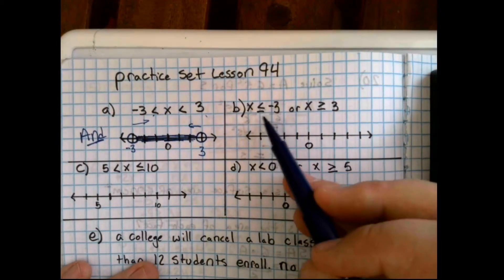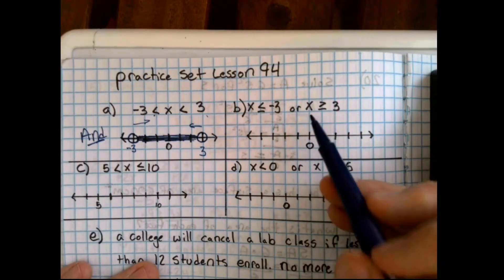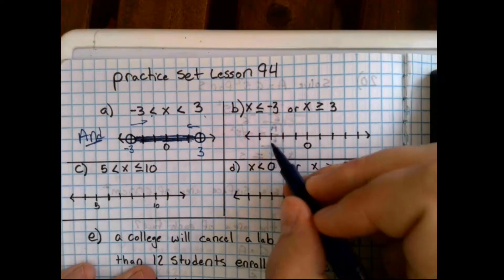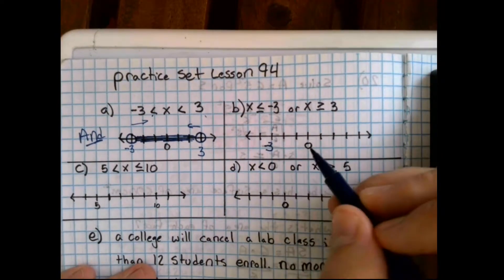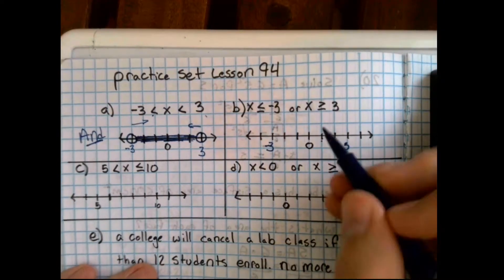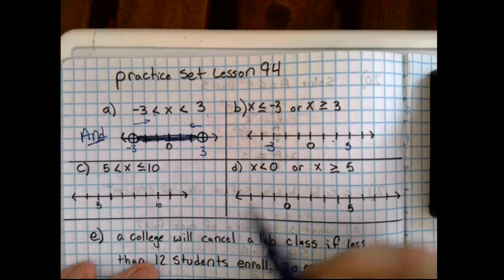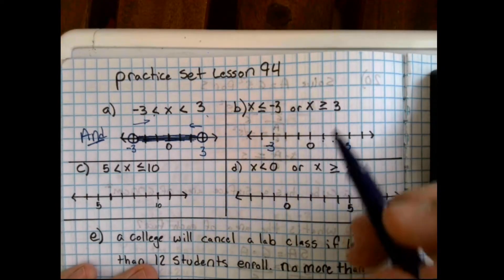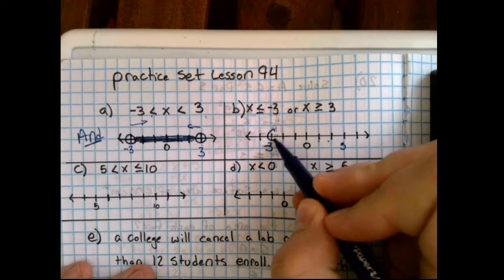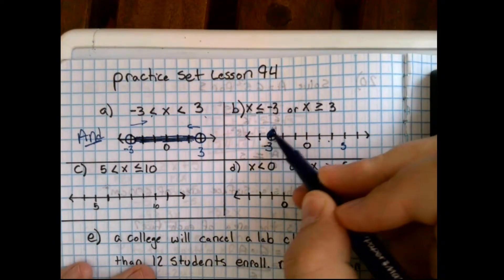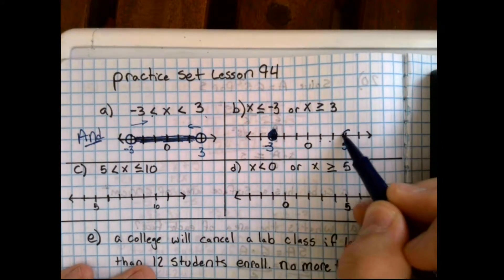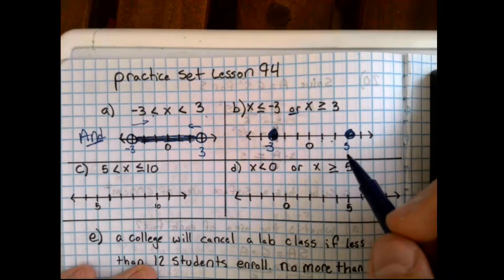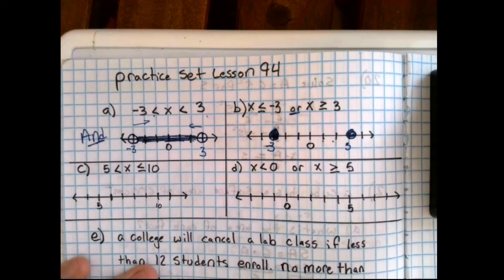B says x is less than or equal to negative 3, or x is greater than or equal to positive 3. So, again, we're dealing with negative 3 right here, and 3 right here. This time, however, we have this little bar underneath the inequality. That means it is equal to. We've got x is less than or equal to, x is greater than or equal to. Those or equal to's mean we need a closed dot. We can see in the problem it's an or problem. Which means all we have to do is graph one side, graph the other, we're done.